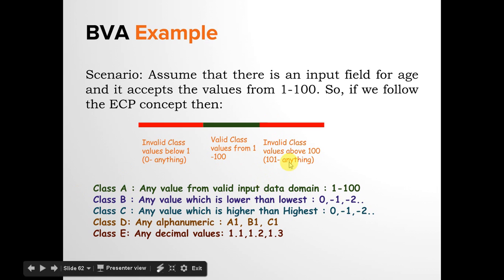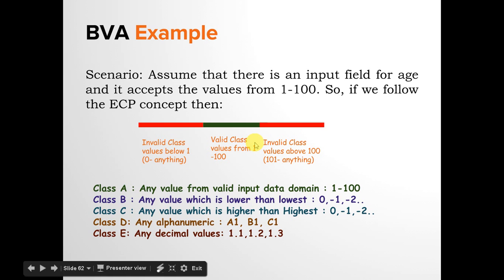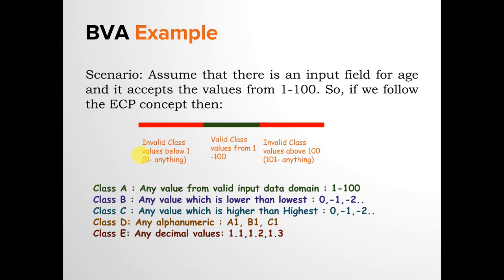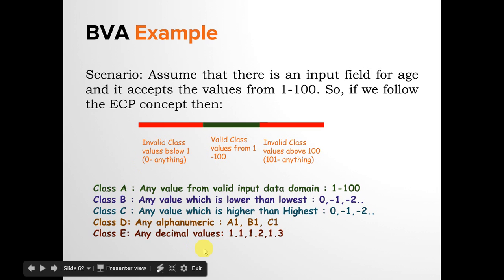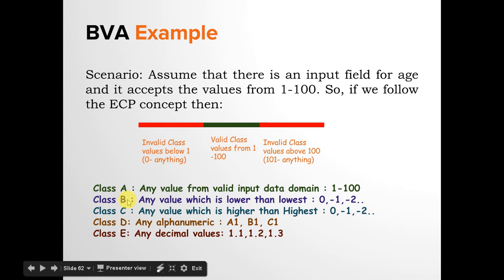In the other invalid class, you keep values higher than the highest valid value. These represent negative testing scenarios. So there will be three classes as per the valid data domain. You can also create additional classes with alphanumeric values — it doesn't matter whether you test with A1, Z1, or C1. The same applies to decimal values; whether you enter 1.1 or 100.1, the result will be the same. This is how you divide input data into equivalence classes and pick at least one data point from each.